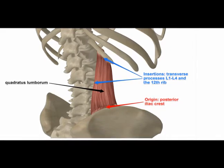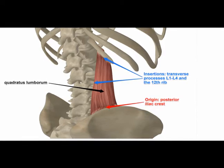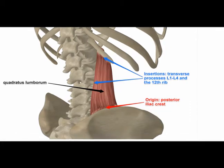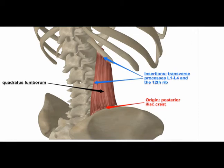The QL originates on the internal lip of the iliac crest and on the iliolumbar ligament. It inserts onto the 12th rib and also onto the transverse processes of vertebrae L1 through L5.